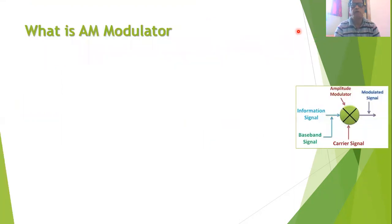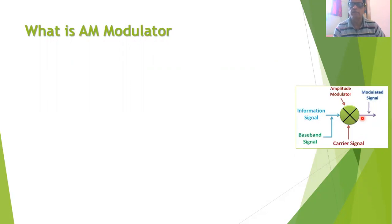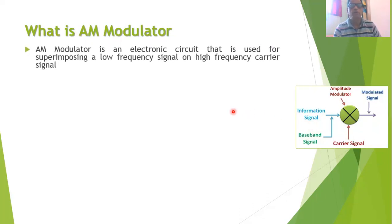An amplitude modulator is an electronic circuit to which we apply two different types of signal. The first one is the information signal, also called the baseband signal, and this is a low frequency signal. We also apply another signal called the carrier signal, which is a higher frequency signal. At the output of the modulator circuit we get an amplitude modulated signal — a carrier signal whose amplitude is changed in accordance with the information signal or baseband signal.